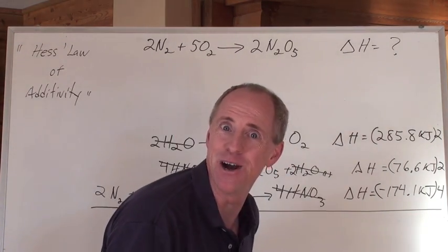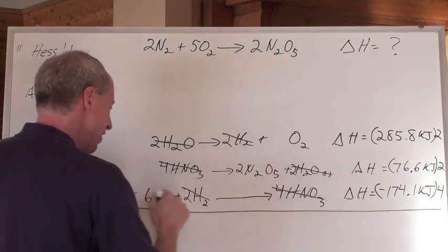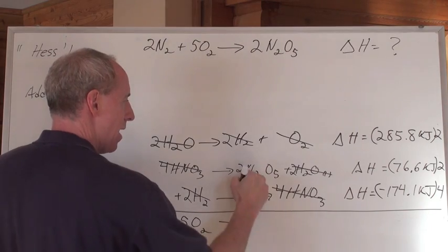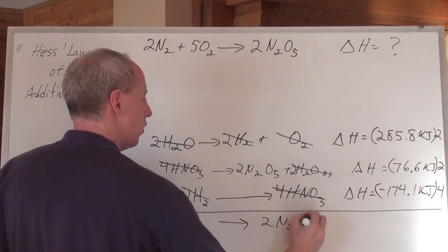One O2. There's one oxygen here. There's six here. That cancels out one and leaves us with five O2s to make two N2O5s.